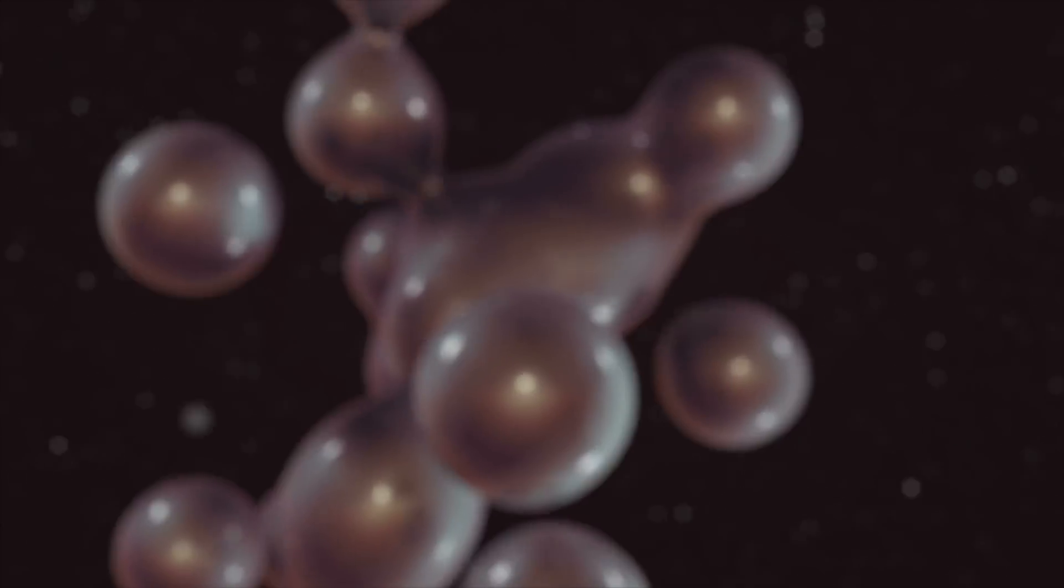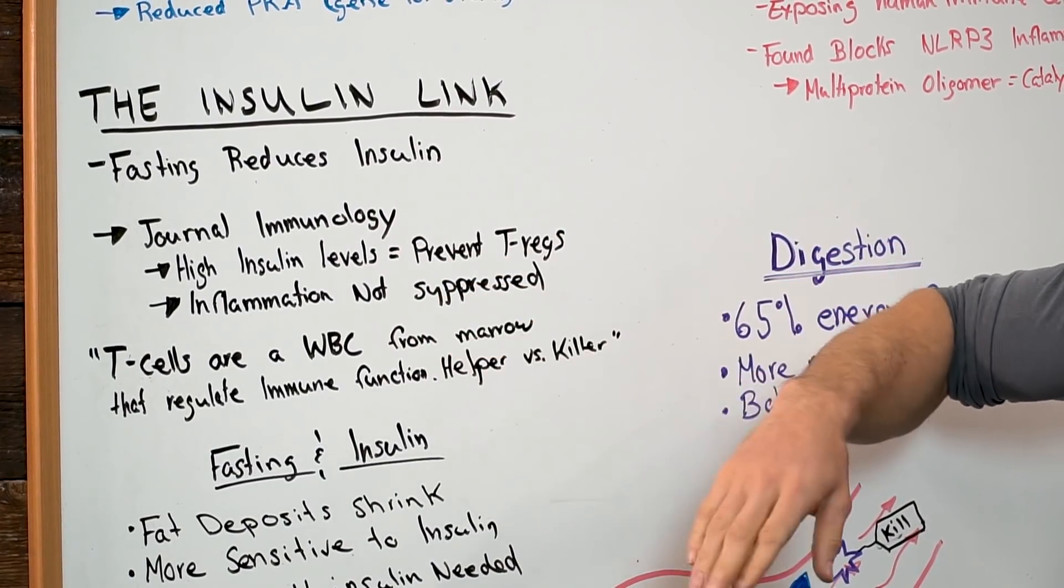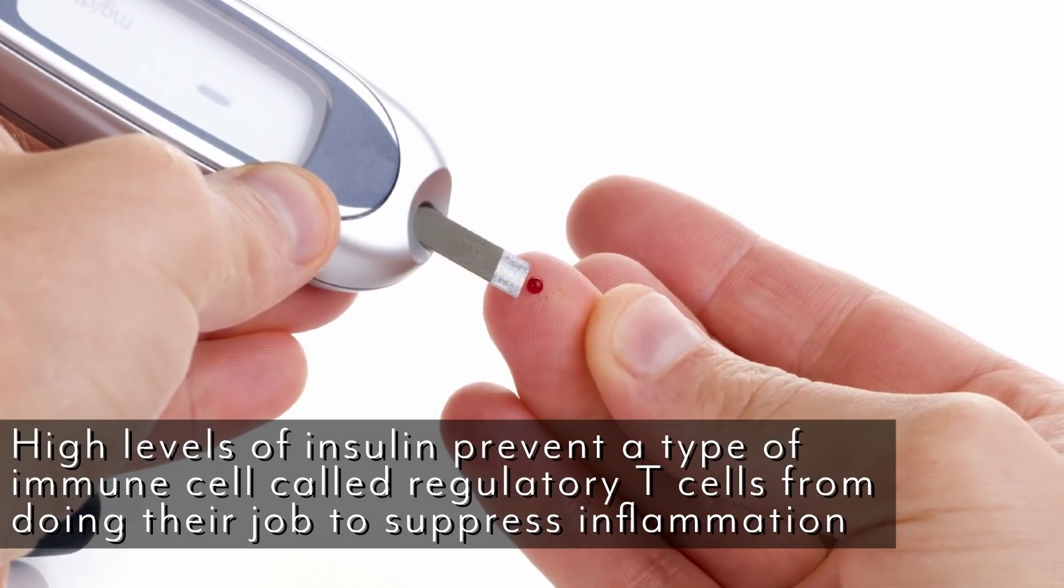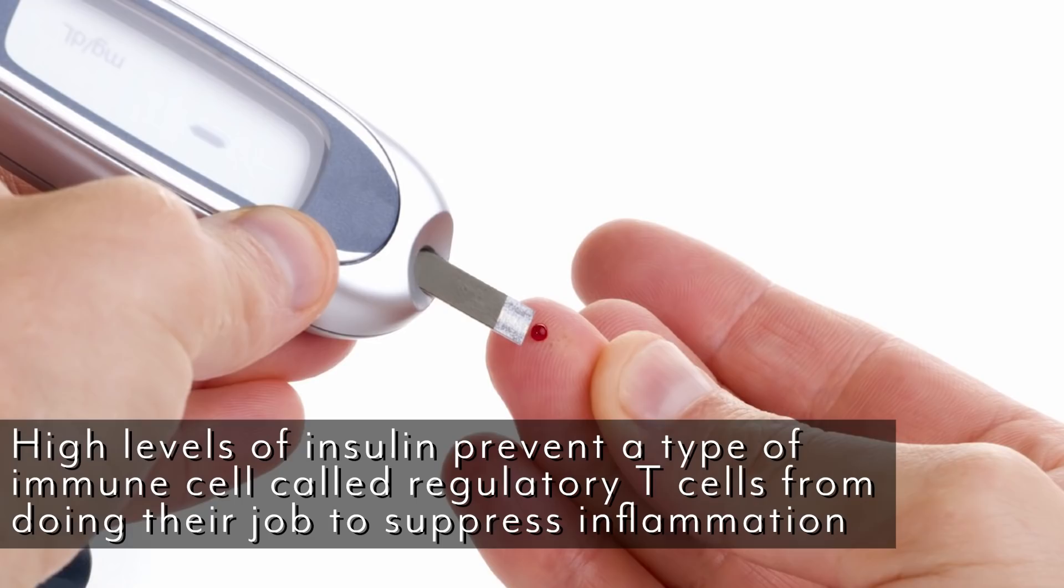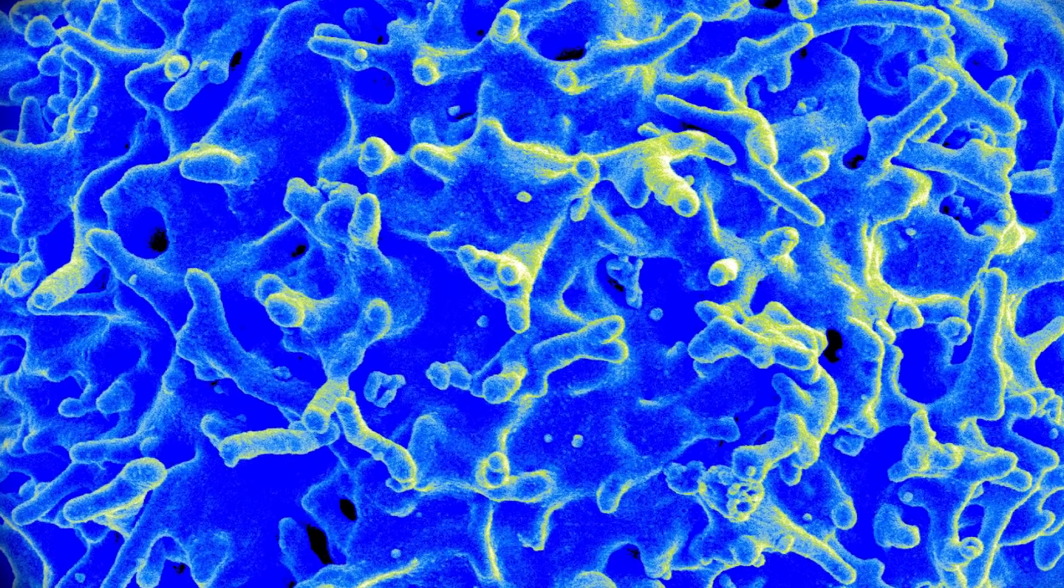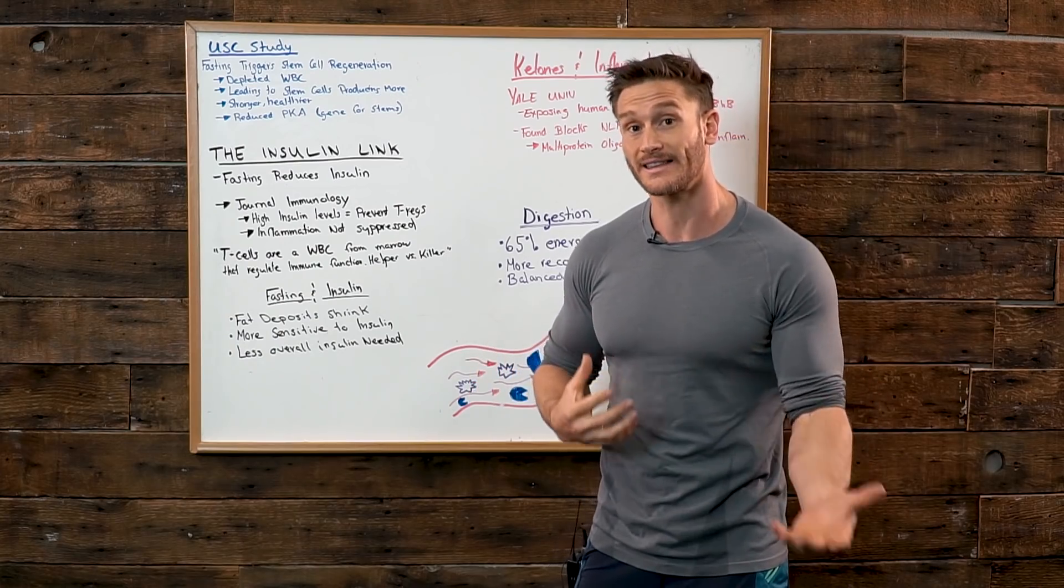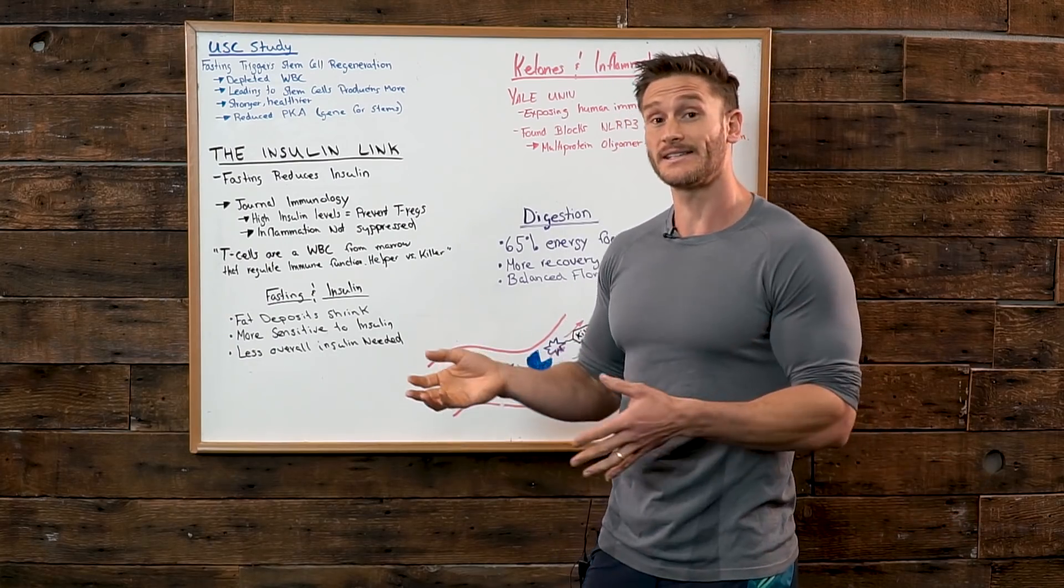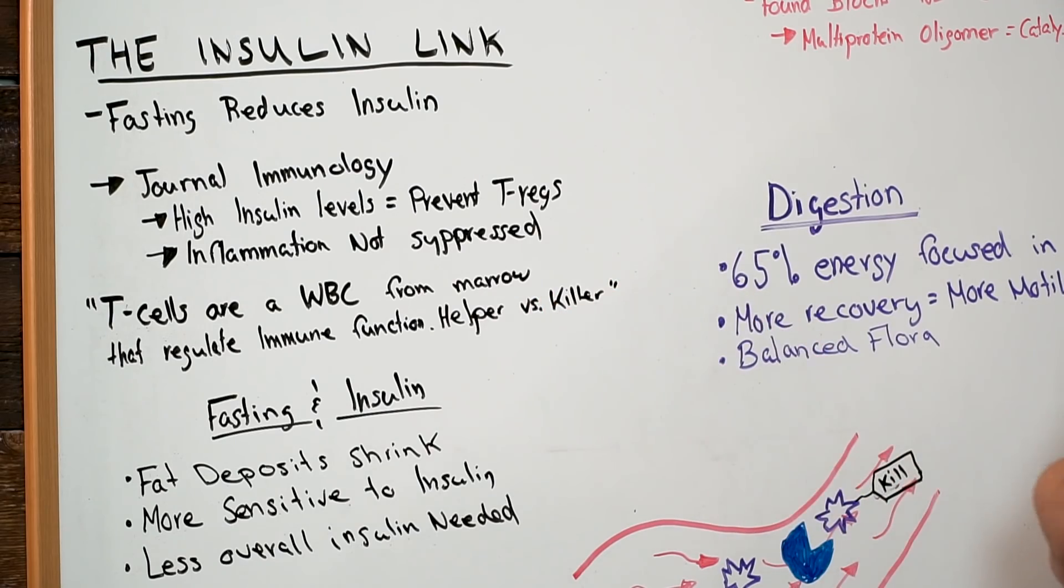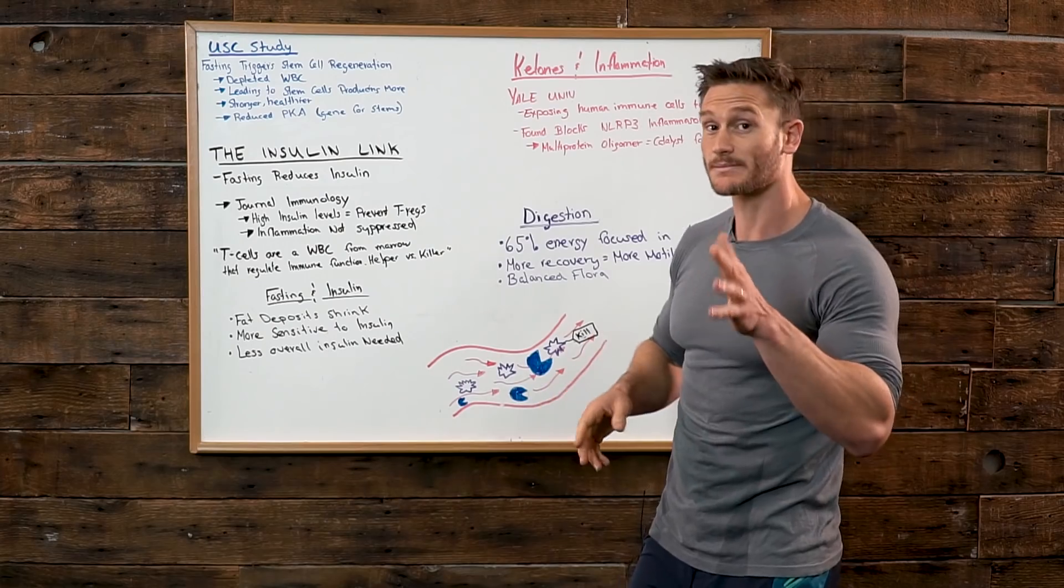Okay so now let's get into the fun stuff. The insulin link I call this the insulin link because fasting reduces insulin. Referencing a study, the Journal of Immunology found that high levels of insulin prevent what are known as T cells from doing their job well also known as Tregs. T cells are there to actually suppress inflammation and to fight off certain illnesses. If we have a disease in the body or if we have an infection we have inflammation and T cells usually come in and fight that inflammation off. T cells are a white blood cell that's actually formed from the marrow that regulate immune function. So we have helper versus killer cells.